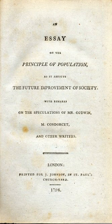The essay was organized in four books: Book 1, of the checks to population in the less civilized parts of the world and in past times. Book 2, of the checks to population in the different states of modern Europe. Book 3, of the different systems or expedients which have been proposed or have prevailed in society, as they affect the evils arising from the principle of population. Book IV, of our future prospects respecting the removal or mitigation of the evils arising from the principle of population. This approach is regarded as pivotal in establishing the field of demography.